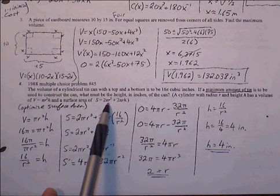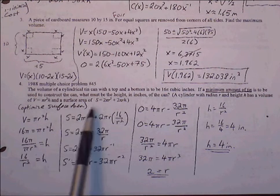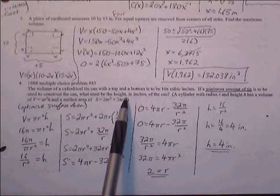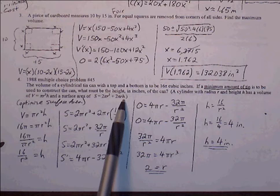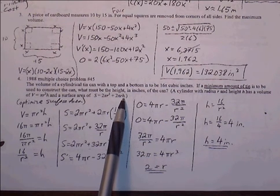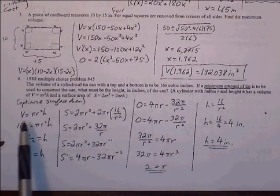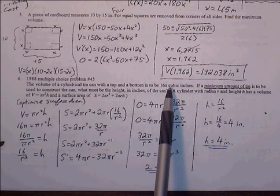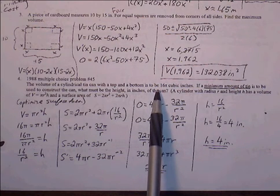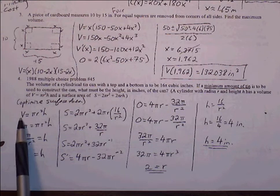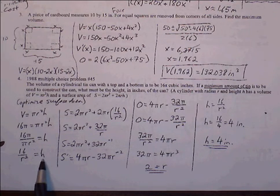We're trying to minimize surface area. The surface area equation has two variables, so we'll replace h using the volume equation. With volume equal to 16π, we solve π r squared h equals 16π: dividing both sides by π r squared gives h equals 16 over r squared. Substituting into the surface area equation and distributing gives everything in terms of r.